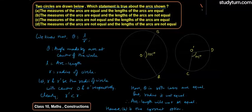तो इस question में दोनों diagrams दिए थे — एक में radius छोटा था, एक में radius बड़ा था — मतलब radius दोनों के equal नहीं थे, but measure of arc equal था। दोनों arcs center पर 105 degree का angle बना रहे थे, लेकिन radius equal नहीं है। और theta = L upon R — अगर theta equal है, R equal नहीं है, तो L भी equal नहीं होगा। तो measure of arc equal है but arc length equal नहीं है — so B option हमारा correct option है। Thanks for watching this video, please subscribe to our YouTube channel.